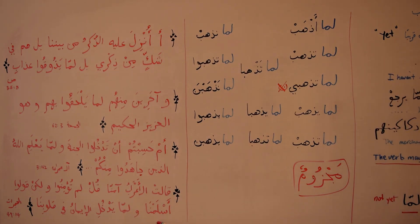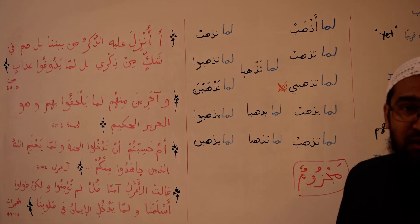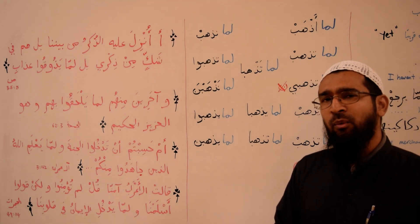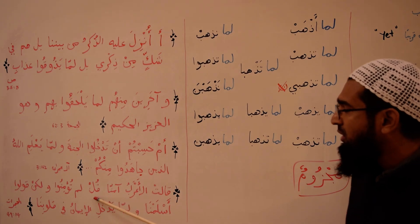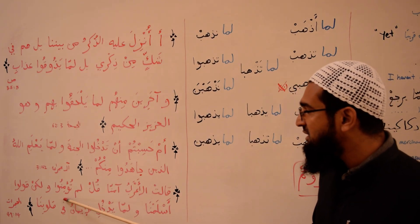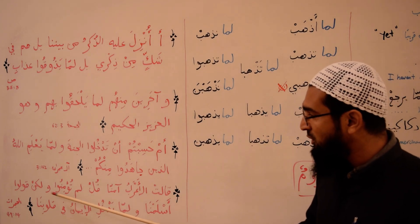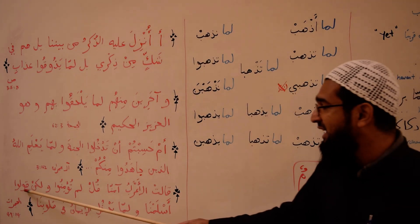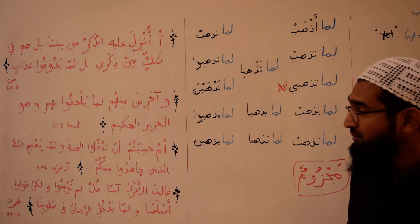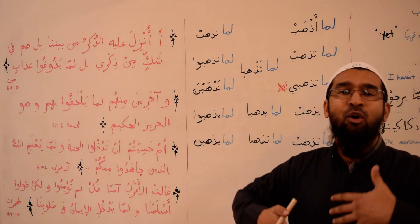The next verse is in Surah Al-Hujurat, verse number 14. Allah says: قَالَتِ الْأَعْرَابُ آمَنَّا قُلْ لَمْ تُؤْمِنُوا وَلَكِن قُولُوا أَسْلَمْنَا وَلَمَّا يَدْخُلِ الْإِيمَانُ فِي قُلُوبِكُمْ. The Bedouins say: we have believed — meaning we have complete iman. Allah says, say to them: لَمْ تُؤْمِنُوا — you have not believed. لَمْ is majzum — this is from part one. Because Islam is a lower level than iman.